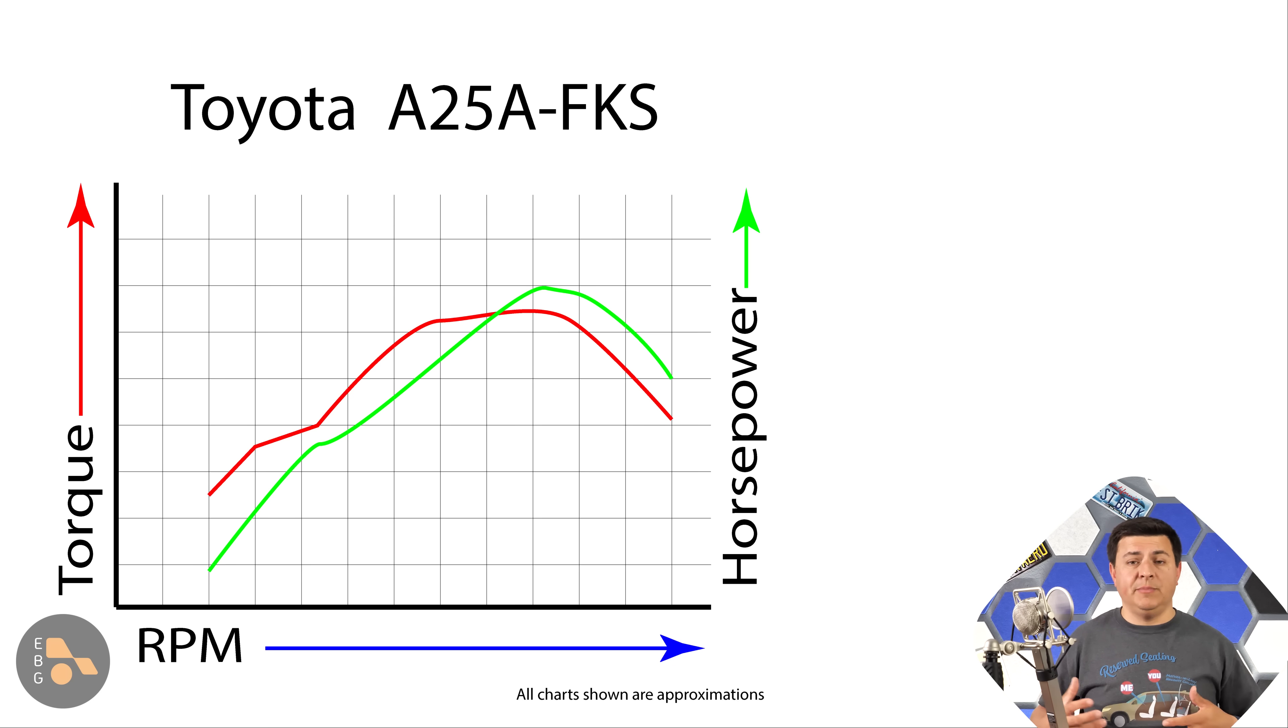It's possible for two vehicles to produce 300 horsepower and one to go notably faster than the other. In the gasoline world, a lot of that has to do with gearing or perhaps adding a turbocharger or supercharger. In other words, the way the vehicle is producing the power, and that's exactly what's going on in the electric world as well.